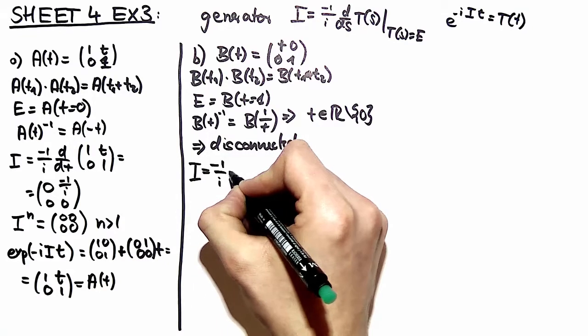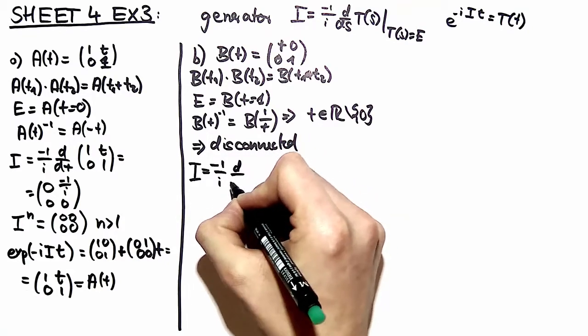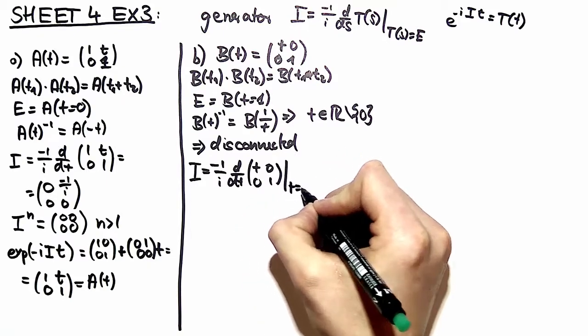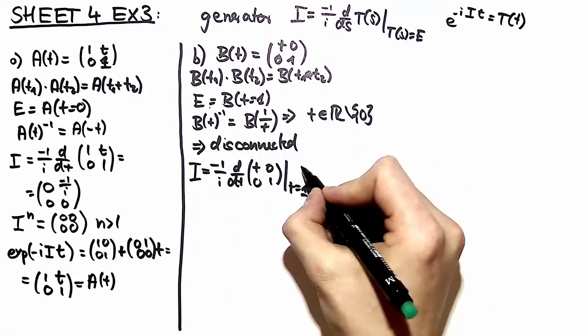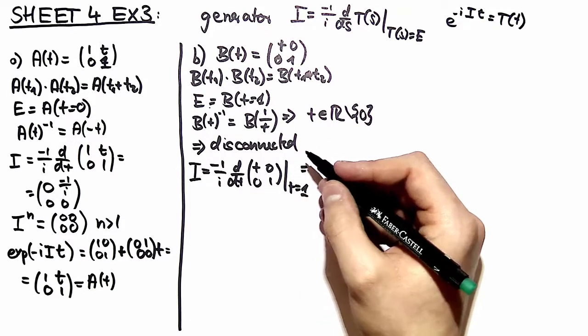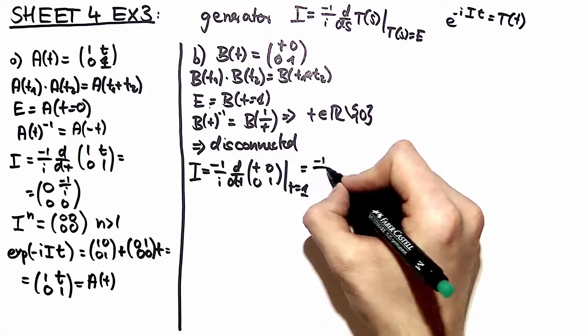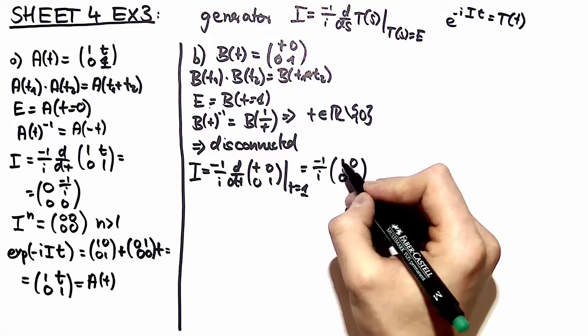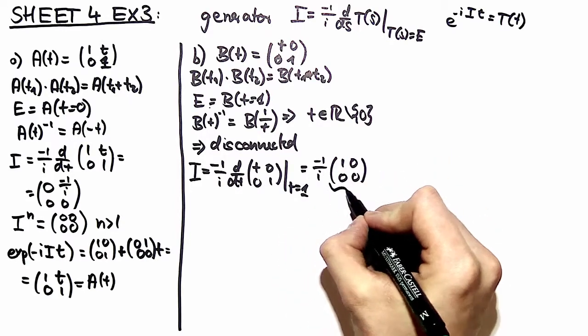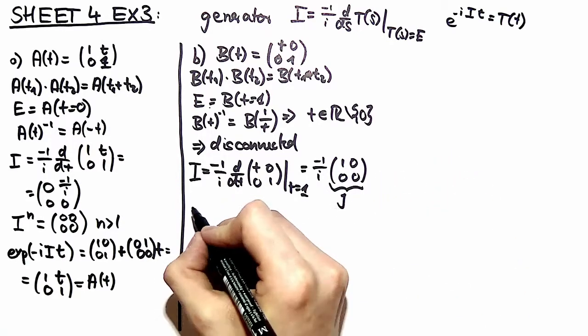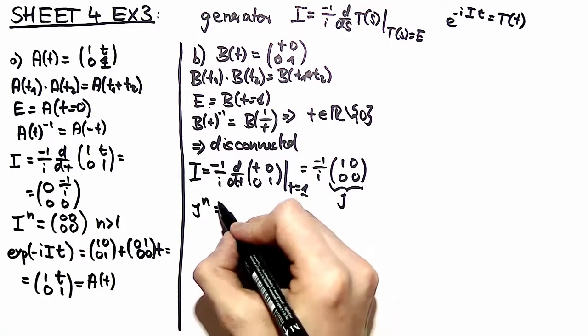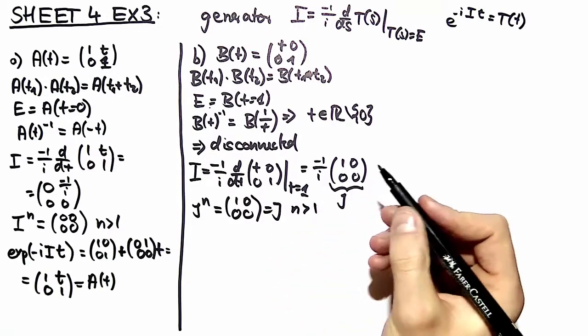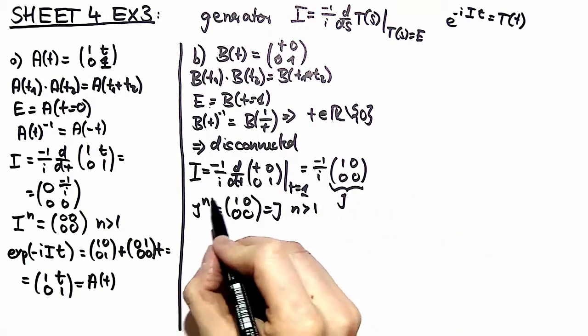We take minus 1 over i d/dt of our matrix representation where t is equal to 1, because 1 yields the identity element. So what is this? This is the matrix where 1 is on the upper left corner with a prefactor, and we call this j. An important observation is that j to the n is always j, and to the 0 you have the identity.